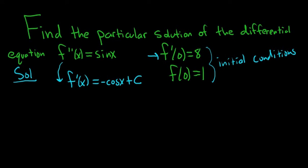Integrating the second derivative, we get the first derivative. Now we're going to use our first condition. So f'(0) = -cos(0) + C, and that's equal to 8.